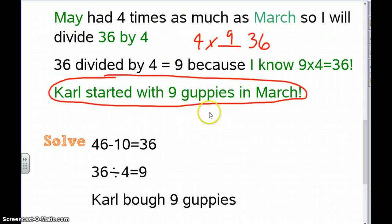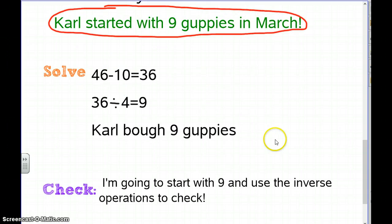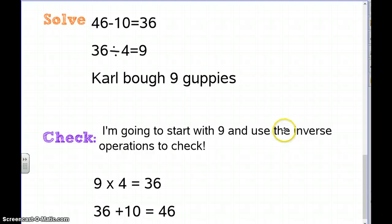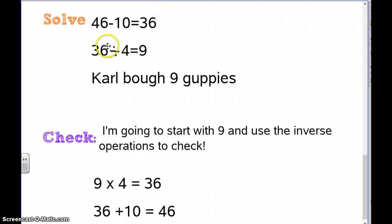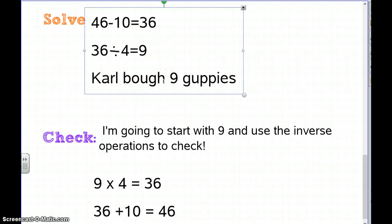Let's go over the solving steps again: he had 46 in June, minus 10 gives 36 in May, then 36 divided by 4 gives 9 guppies. So in March, Carl bought 9 guppies.